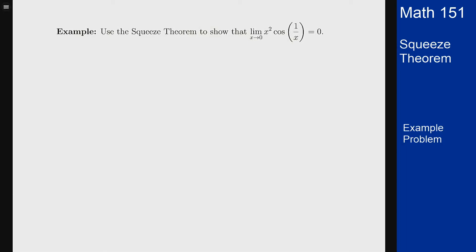In this example, we'll look at how to use the squeeze theorem to show the limit as x goes to 0 of x squared times cosine of 1 over x equals 0.